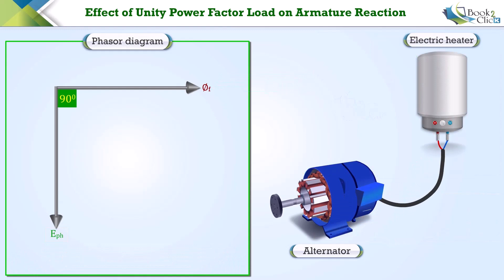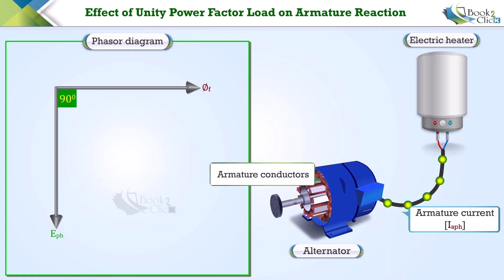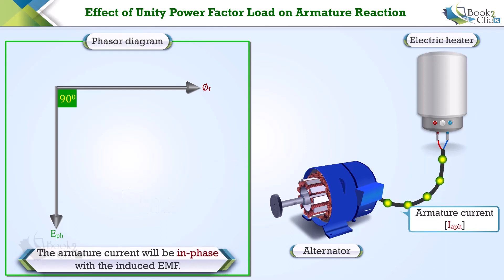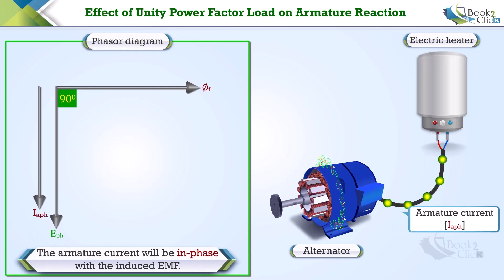If we connect the electric heater to the alternator, e_ph will circulate current through the armature conductors and the electric heater. This current is called armature current i_aph. Since the electric heater is purely resistive, the armature current will be in phase with the induced EMF.